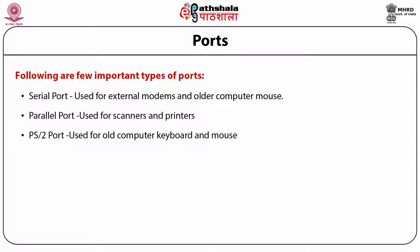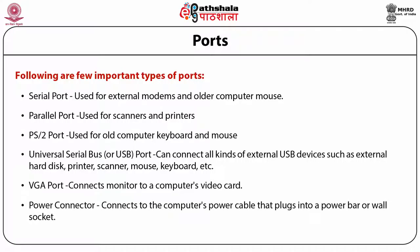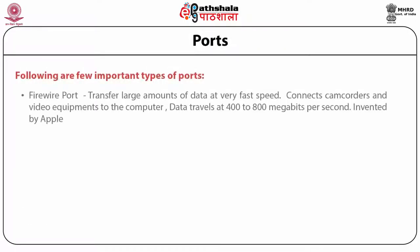We have the USB or the universal serial bus port which can connect all kinds of external USB devices like external hard disk, printer, scanner, mouse, keyboard etc. VGA port connects the monitor to a computer's video card. The power connector connects to the computer's power cable that plugs into the power bar or the wall circuit. There is a FireWire port which transfers large amounts of data at very fast speed. This connects camcorders and similar video equipment to the computer. Here the data travels at the rate of 400 to 800 Mbps.